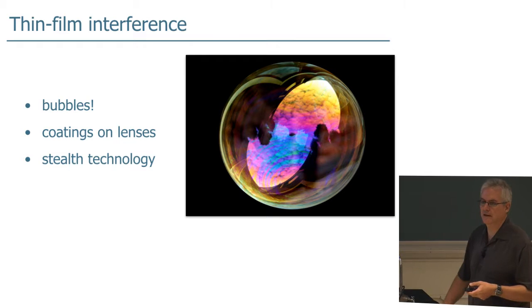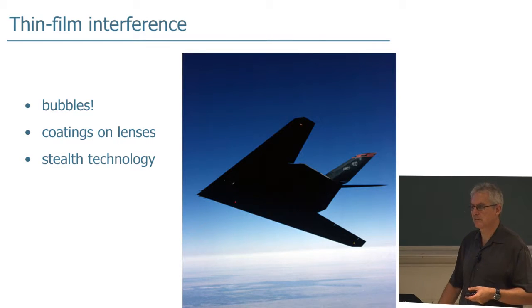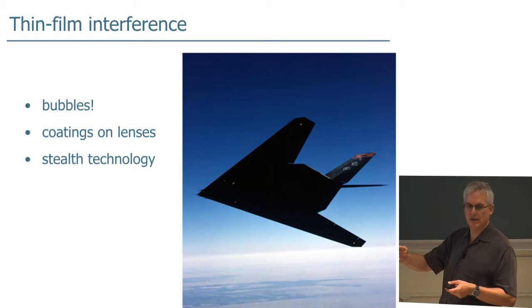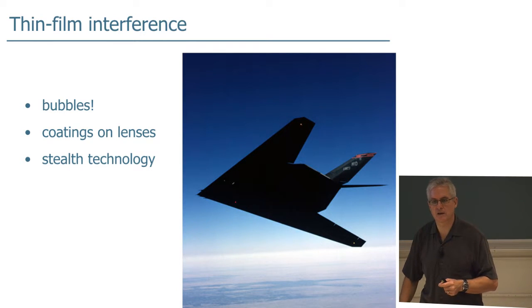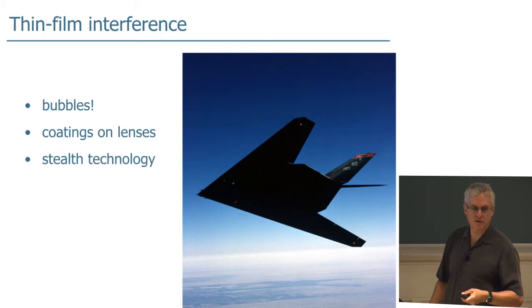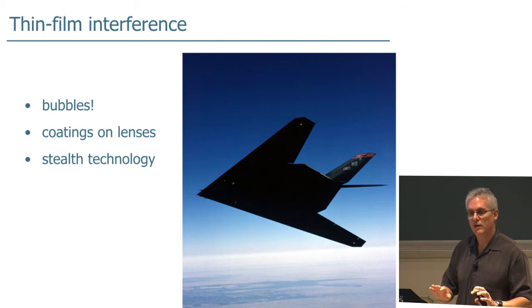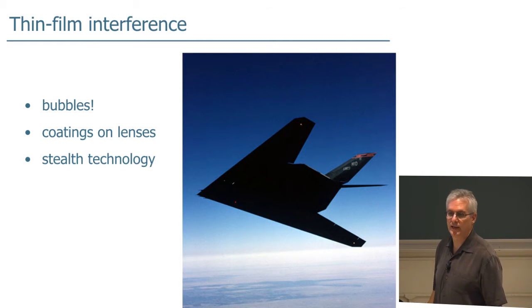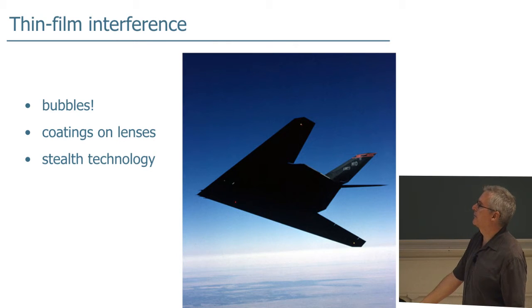It's also used in stealth technology. For airplanes or ships that need to be invisible to radar, radar is typically in the microwave or short few millimeter range of wavelength radiation. And so if you have a coating that's a few millimeters thick of a material which will reflect it at two different surfaces, you can arrange it so that it destructively interferes and you don't get a radar pulse return off of the stealth fighter. You've probably seen pictures of stealth aircraft which have very flat surfaces. That's so that when the radar hits it, it just bounces off that way rather than bouncing back toward the radar receiver. But that's how stealth technology works as well, by thin film interference.